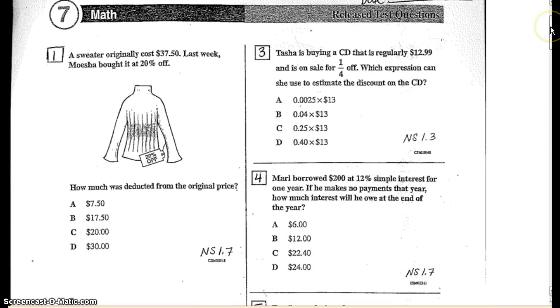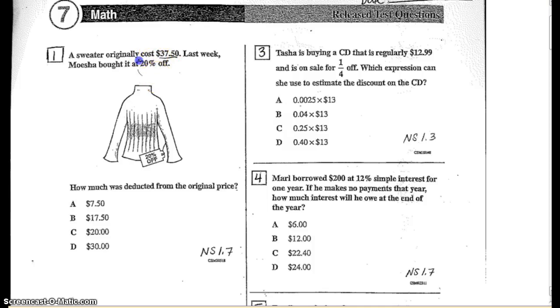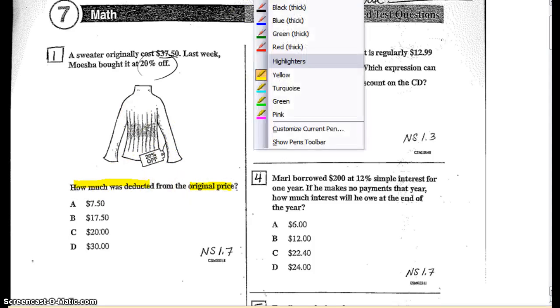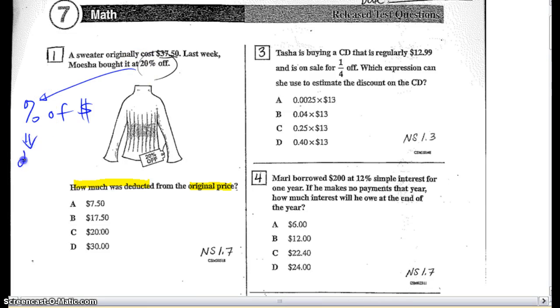Alright, let's start with number one. The sweater is originally going to cost $37.50 and we have Moesha that is buying it at 20% off. So she's saving some money. Now the question that is being asked here, how much was deducted from the original? So really I'm only finding the discount price. So what I need to do is I always want to find the percentage of the cost, so a part of the entire amount. So a part of would be the 20%. You always want to change that to a decimal.